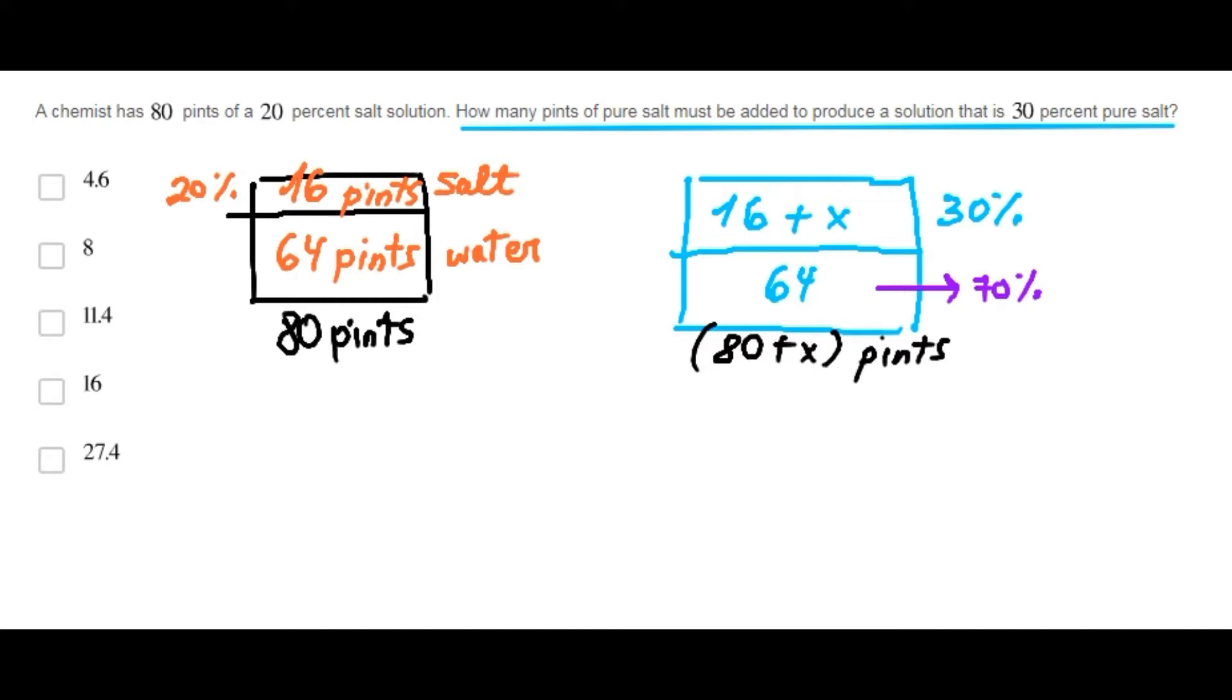And since water represents only 70% of the new solution, we get the following. 64 equals 70% of 80 plus x.